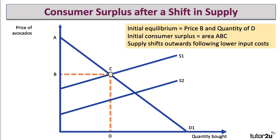Now let's assume that there's a fall in input cost — it could be the cost of fertiliser, or the cost of animal feed, or whatever it is. The costs of production go down, and supply shifts outwards from S1 to S2.